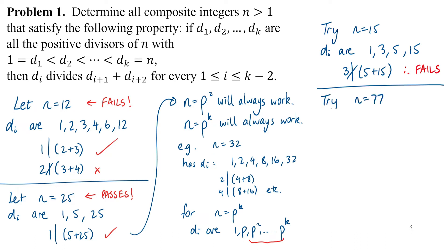It's going to fail because 3 does not divide 5 plus 15. To take another example, 7 by 11 which is 77, the divisors are 1, 7, 11 and 77. Again it fails at the same point because 7 does not divide 11 plus 77.